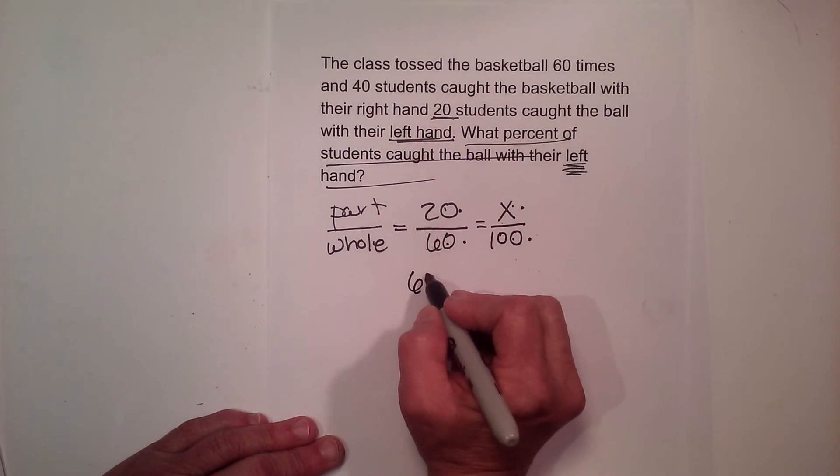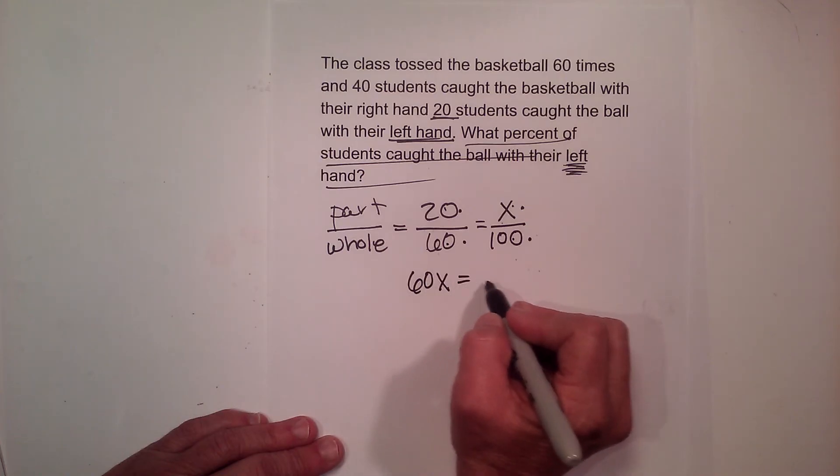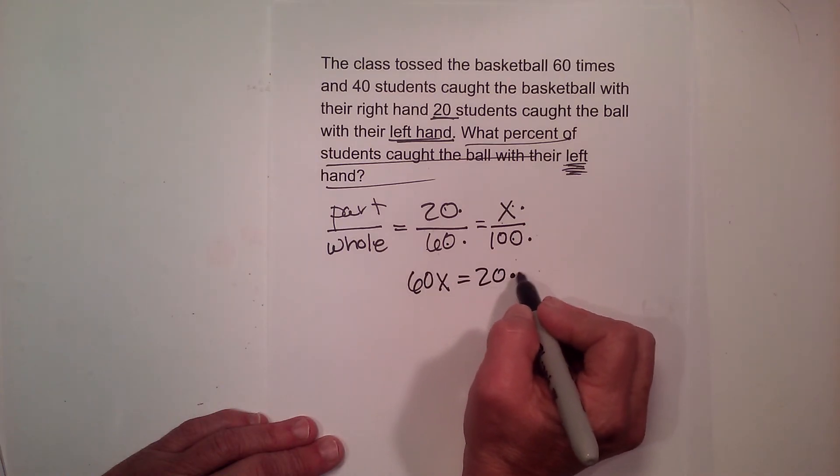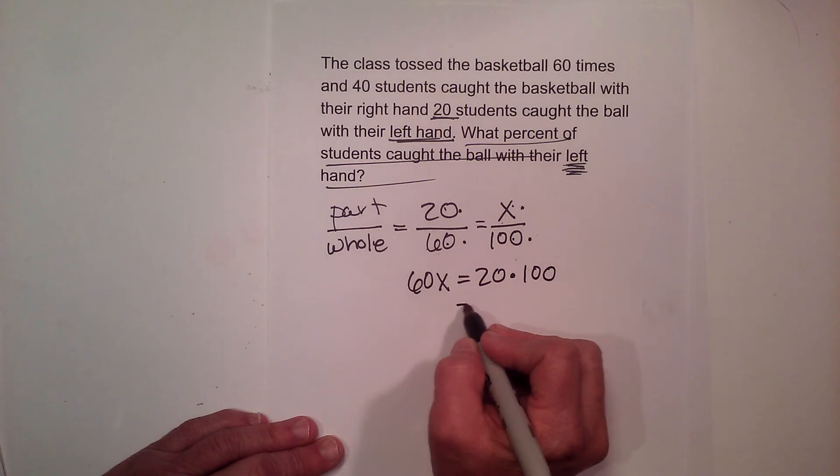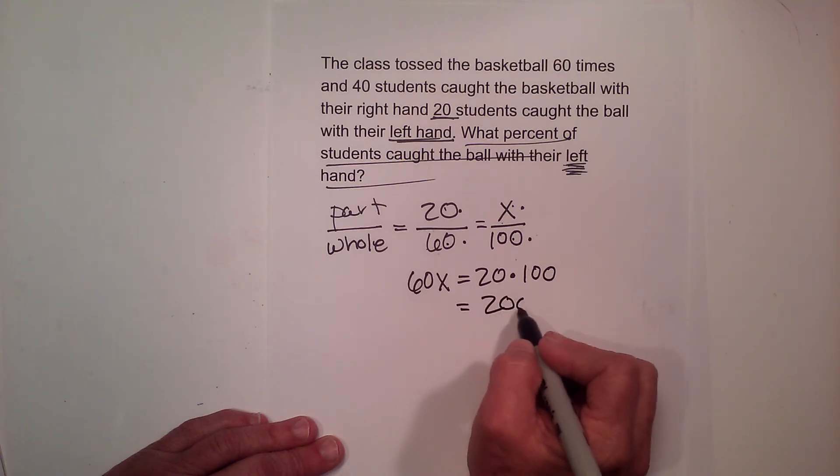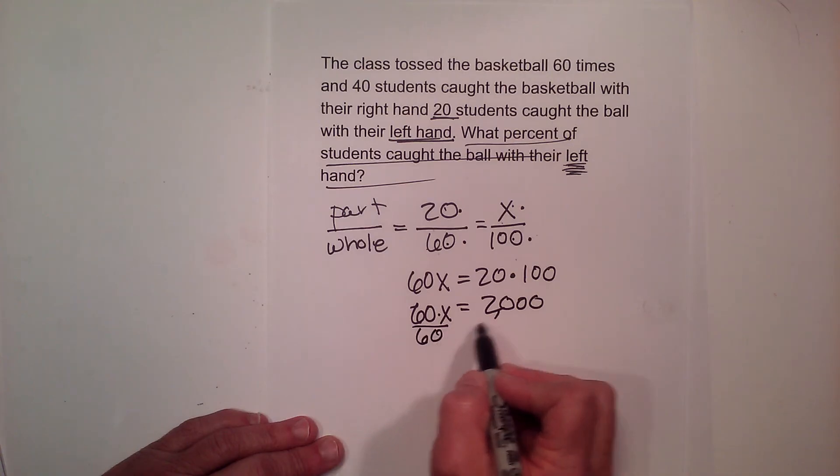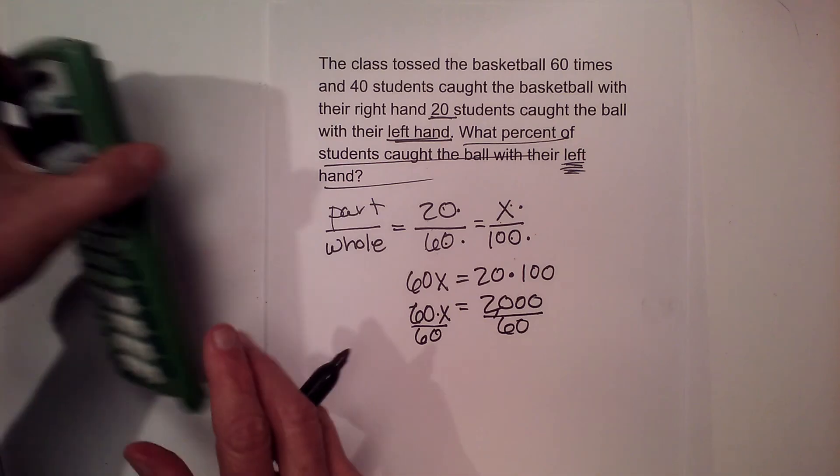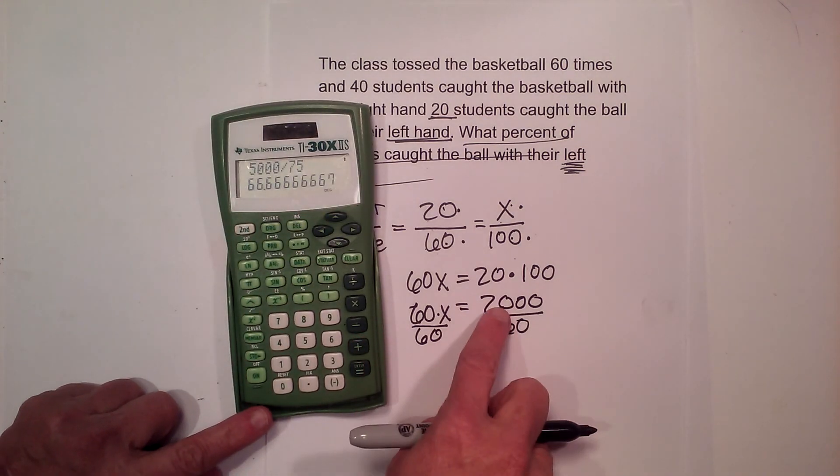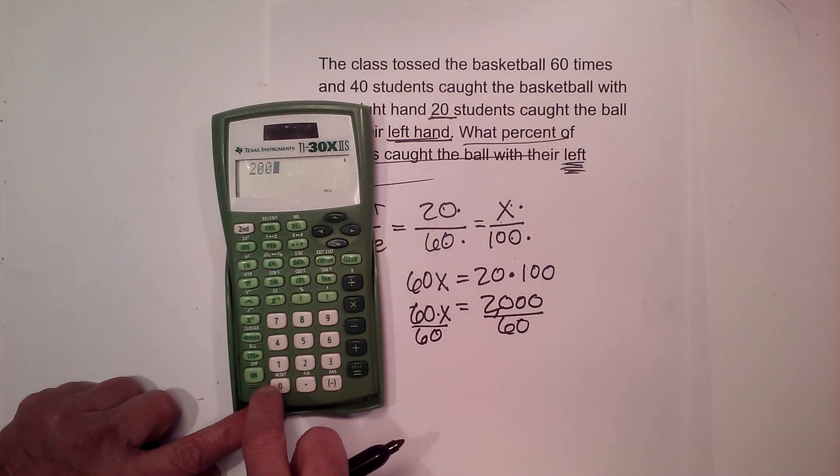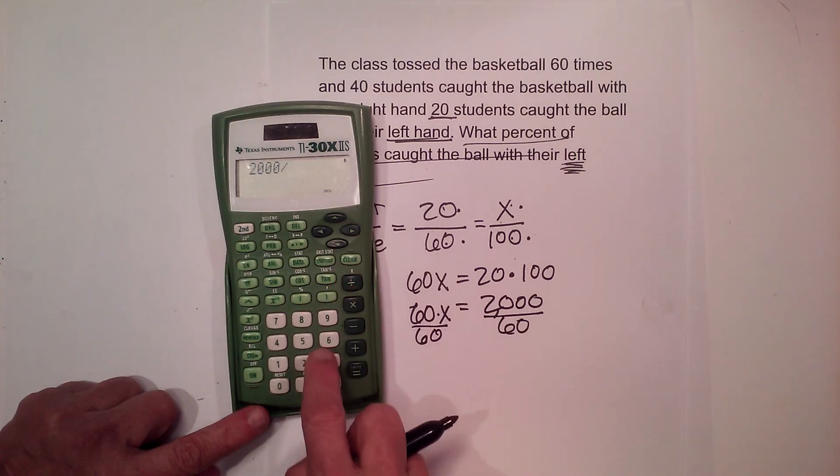Now let's cross multiply. 60x is equal to 20 times 100. Well that's going to give me 2000, so 60 times x is equal to 2000. To get the x by itself, we divide both sides by 60. So let's grab our calculator and take the numerator, which is 2000, and divide it by 60.